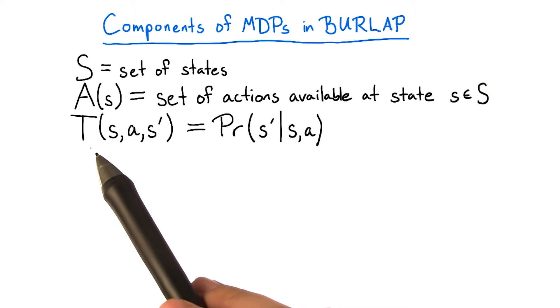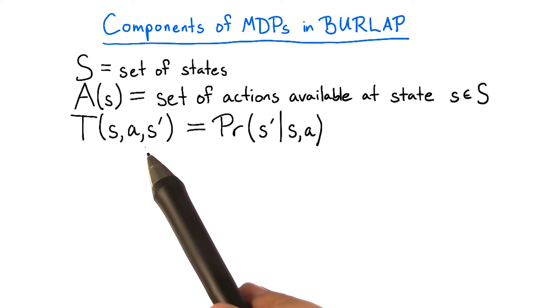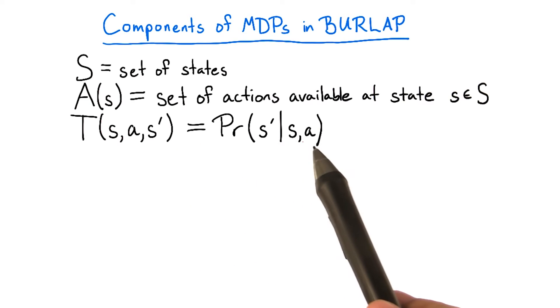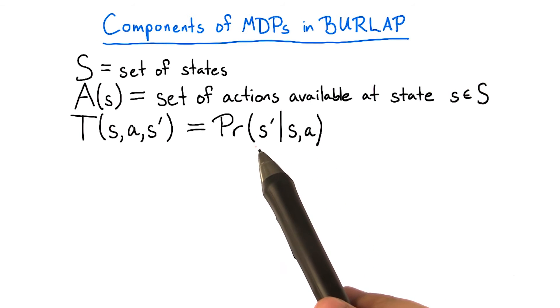Additionally, there is a transition function T that gives the probability that if we are in state s and take action a that we end up in state s'.